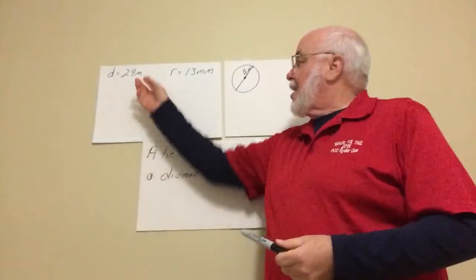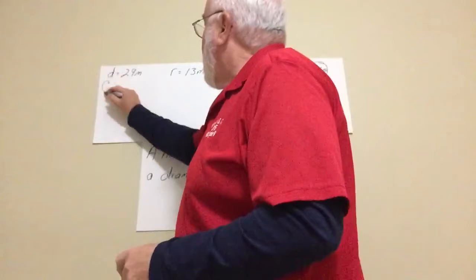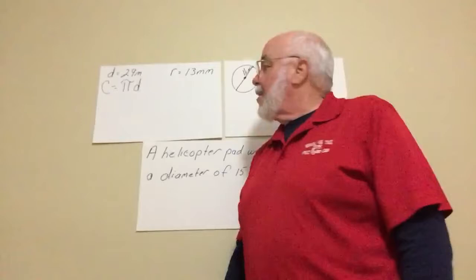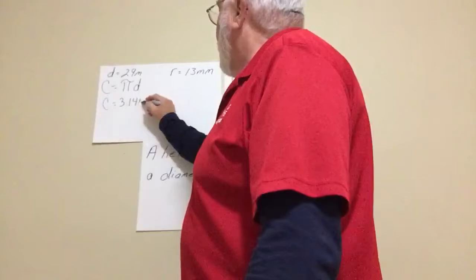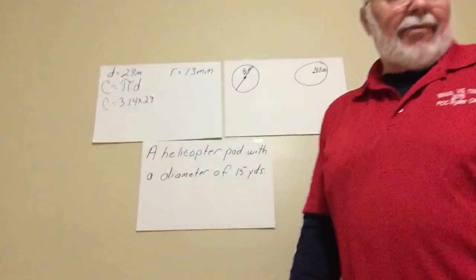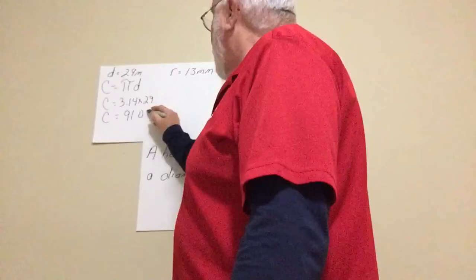So different types of problems. One is where they just give us a measurement. The diameter equals 29 meters. So all we do, circumference, so they give us the diameter. We're going to use that formula. Then we just plug it in. And circumference equals 3.14 times 29. And when we do that, we get circumference equals 91.06.